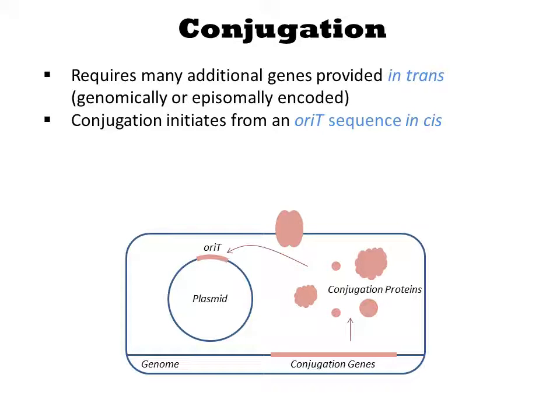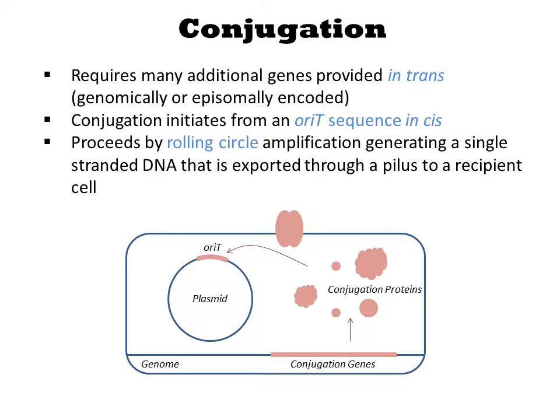The initiation of conjugation begins with rolling circle amplification from the ori-T sequence, generating a single-stranded DNA that is exported from the cell through a pilus. The pilus attaches on the other end to a recipient cell, and the DNA is delivered through this conduit.